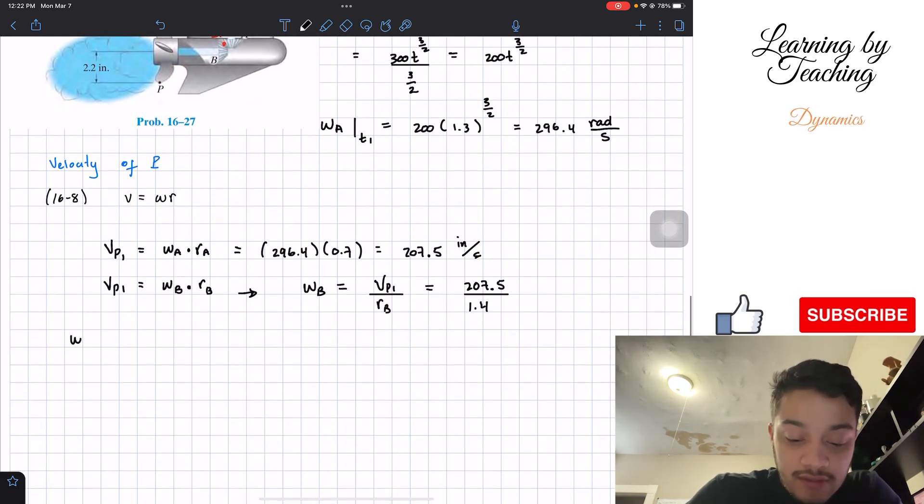So finally, if we plug this into our calculator, the angular velocity of B, or the propeller, is going to be equal to 148.2, and the units should be in radians per second. And this should be our final answer for this problem.